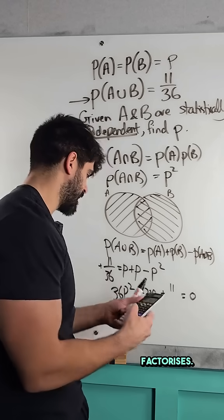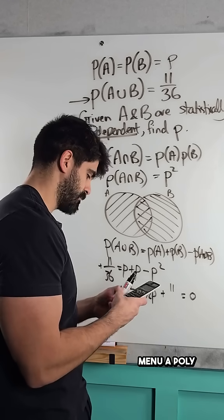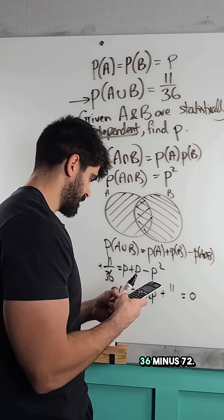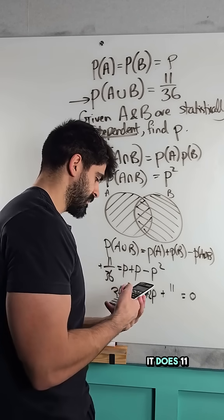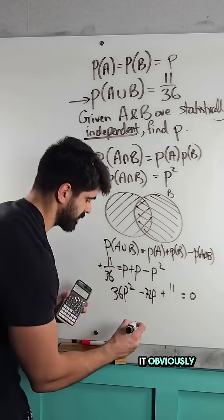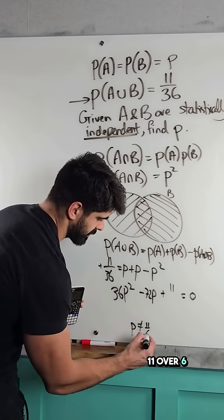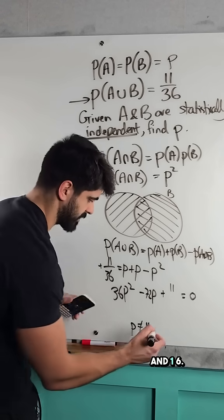I'm hoping that this factorizes, so we have menu A, poly, 36 minus 72. It does. 11 over 6, which it obviously can't be. P cannot be 11 over 6. And 1 sixth.